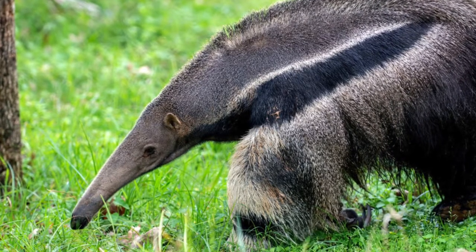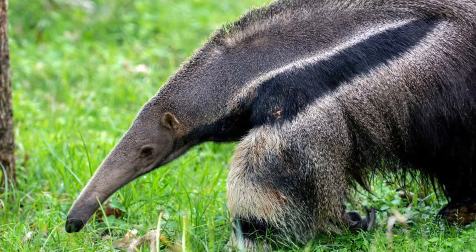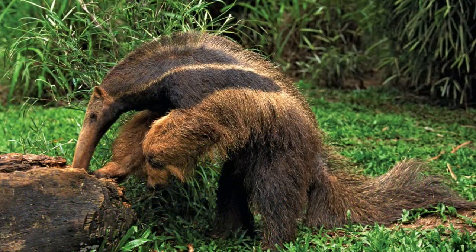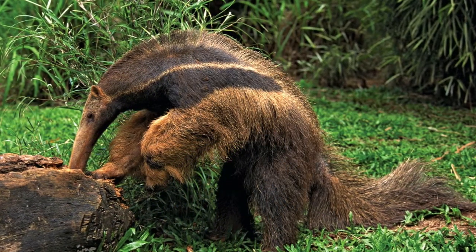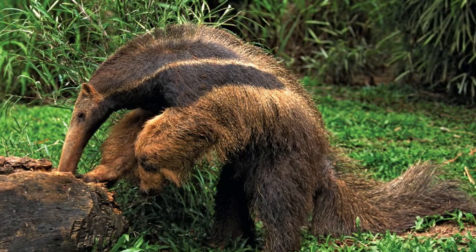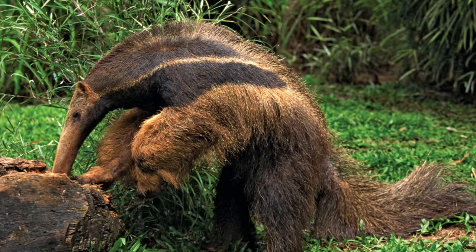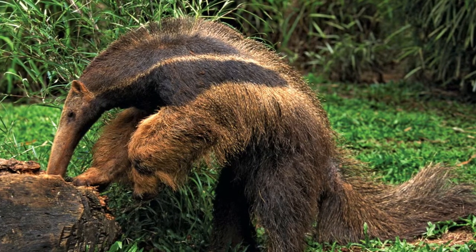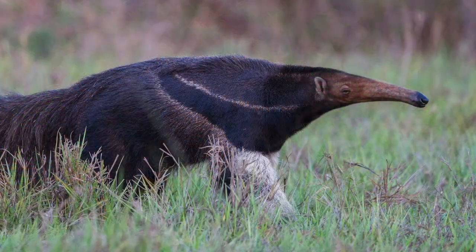The largest species is the giant anteater. From the tip of its snout to the end of its tail, the giant anteater is about 1.8 meters long. Its coat is mostly gray and its long tail is bushy. It feeds on the ground by day and by night.